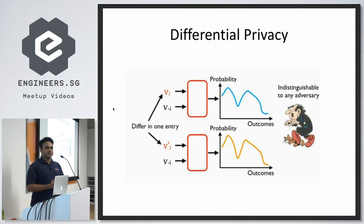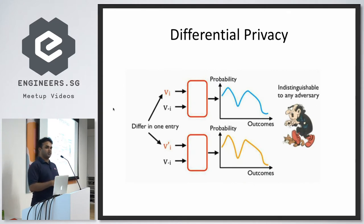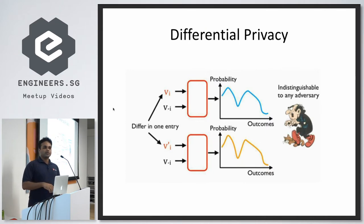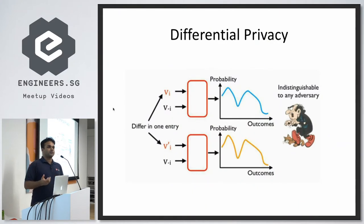Let's get into the details. The first option, if you want to build any kind of privacy-preserving ML or data analysis in general, is what's called differential privacy. Differential privacy is a subfield of cryptography and data analysis.